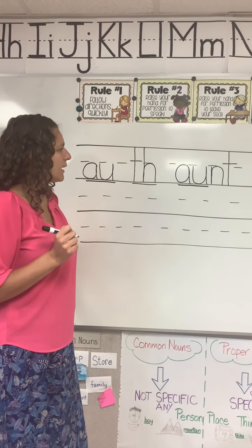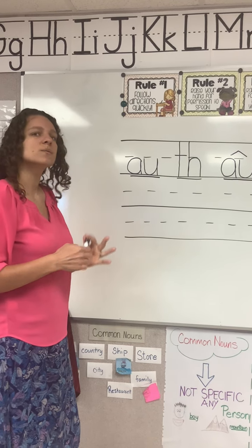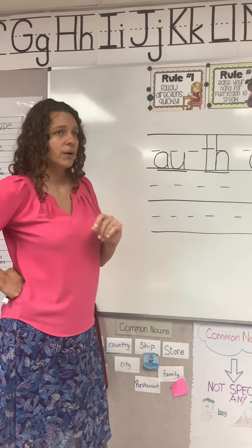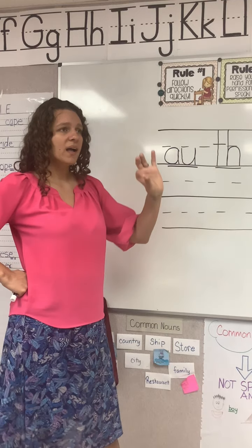Our first word is 'aunt'. What's the word? Good — aunt. An aunt is your mother or father's sister. Sometimes people pronounce this 'ant'. All right, to spell it, though, we need to say 'aunt'.